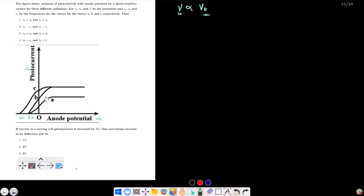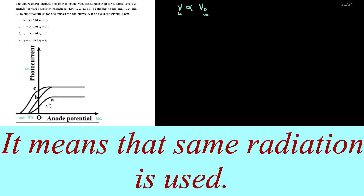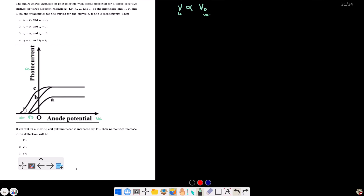Since curves A and B have the same stopping potential, the frequency of radiation A equals the frequency of radiation B: νA = νB. Curve C has a different stopping potential, meaning a different frequency.